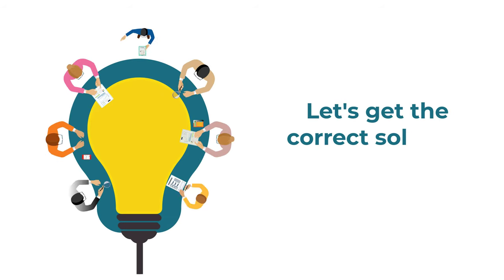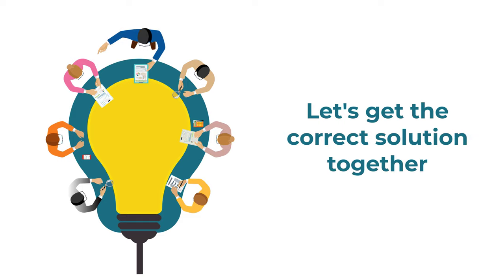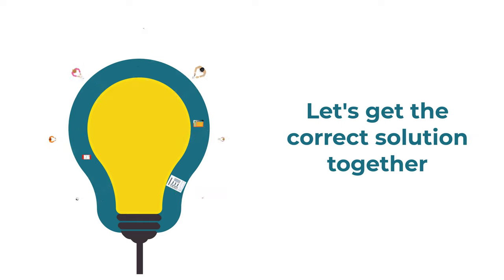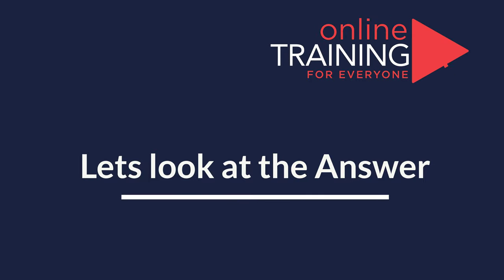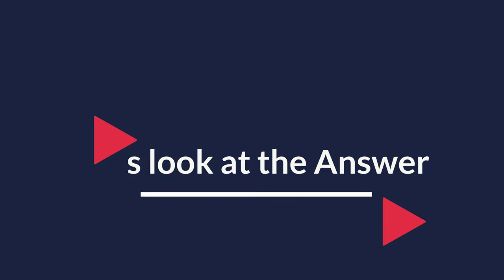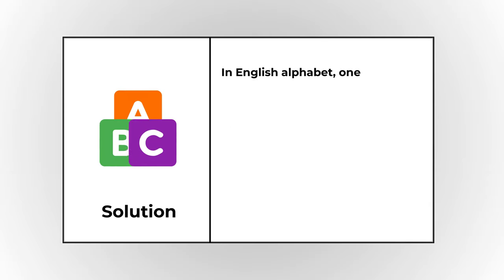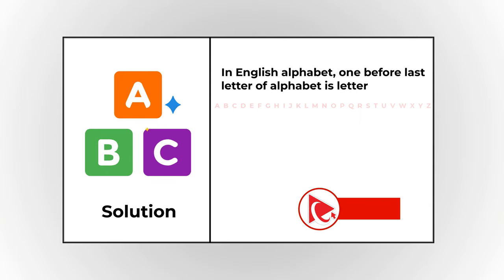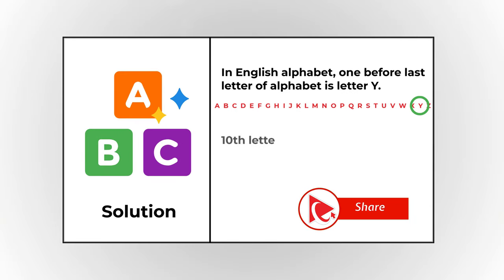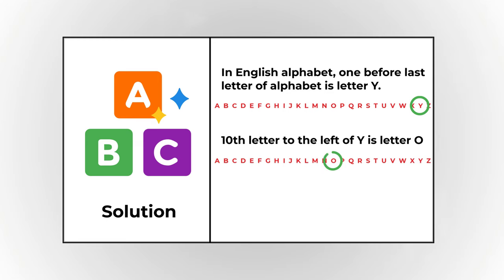Ready or not, let's move forward and get to the correct solution together. As you might be well aware, in the English alphabet there are 26 letters, and the letter 1 before last is the letter Y. The 10th letter to the left of the letter Y would be the letter O. Let me demonstrate it to you. If I am currently at the letter Y, let's count 10 letters to the left.